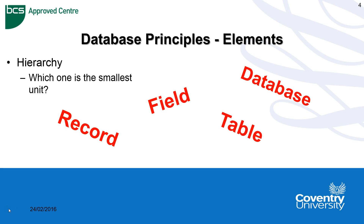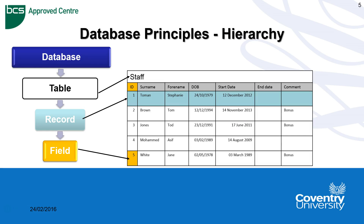Another topic that could come up in the exam is the hierarchy of elements within a database — for example, which is the smallest element. You need to know how a database is built and set up. At the top you have the database as the main overview, then you have tables within that database, and within the tables you have records, which are made up of small individual elements called fields — a bit like Excel really. Looking at the next slide, you can see that hierarchy as an example: a simple table with a record made up of tiny fields, created in the design view of a table.